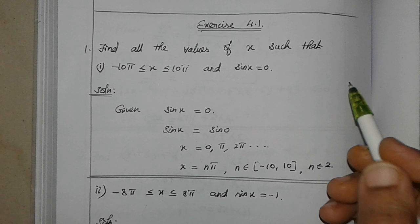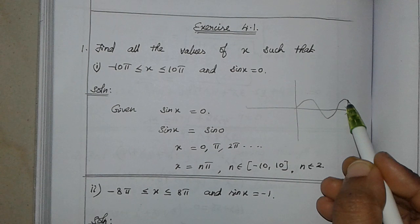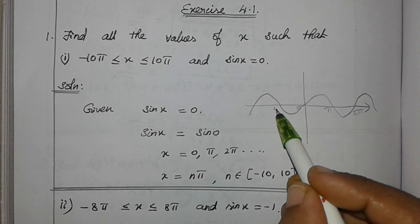In this interval, minus 10π to 10π, sin x is equal to 0. We already know the diagram. Sin 0 is 0, that's how it comes. Now, 0, π, 2π, in this way.